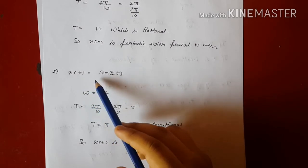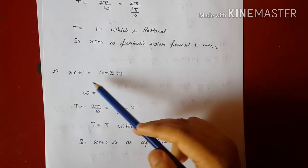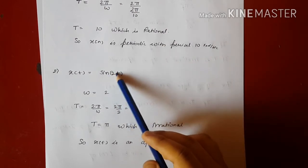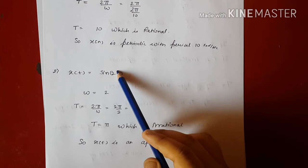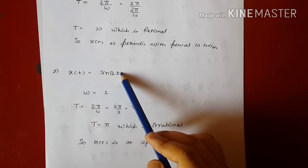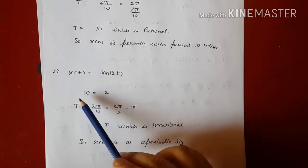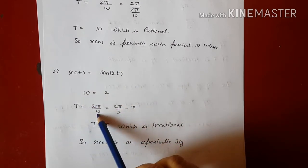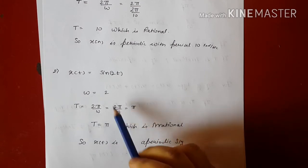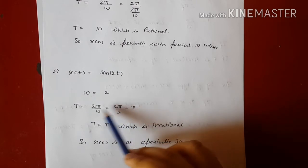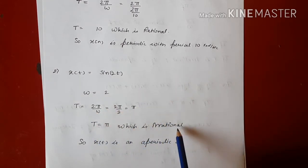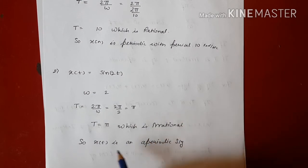Example 2: continuous time signal x(t) = sin(2t). The number adjacent to the time variable is 2, so the angular frequency ω = 2. Therefore capital T = 2π / ω = 2π / 2 = π. Since π is an irrational number, x(t) is an aperiodic signal.